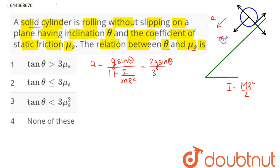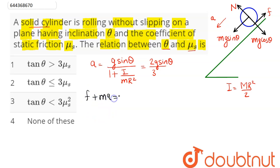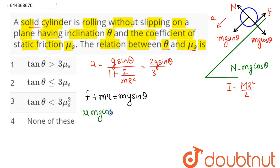Now we need the relation between theta and the coefficient of friction mu s. The force equation along the incline gives: friction plus ma equals mg sine theta. Friction can be written as mu times the normal reaction. Perpendicular to the inclined plane, the normal reaction N equals mg cos theta.